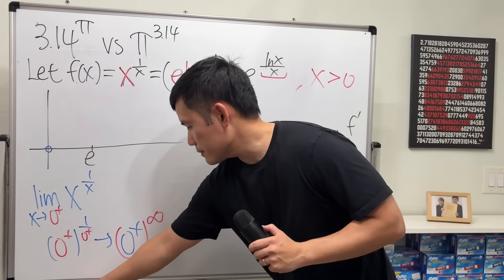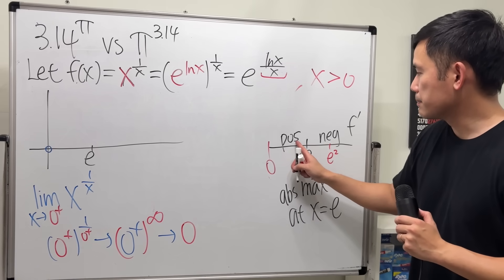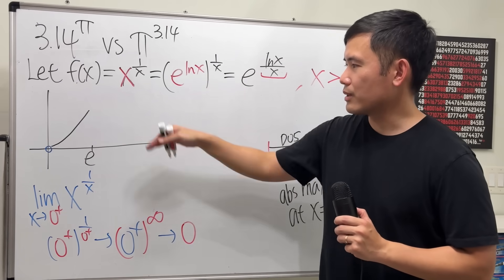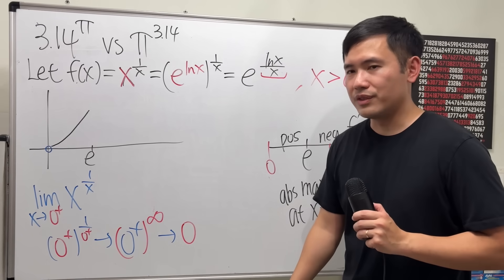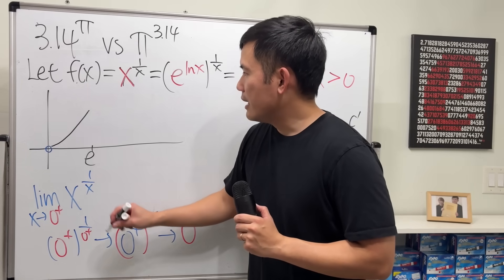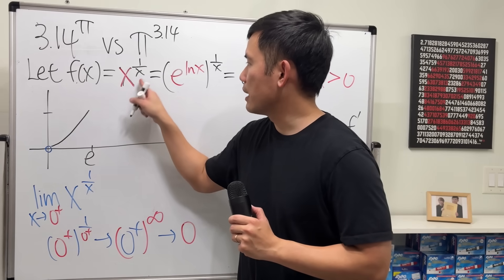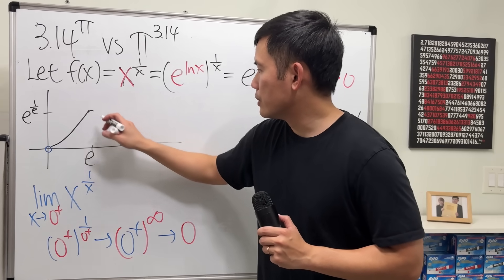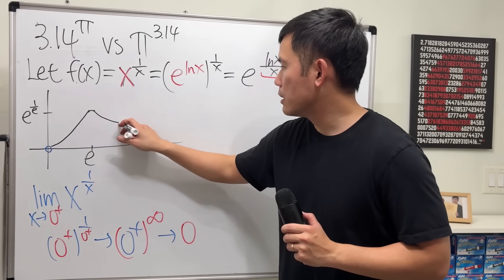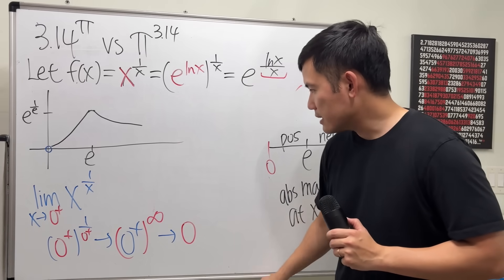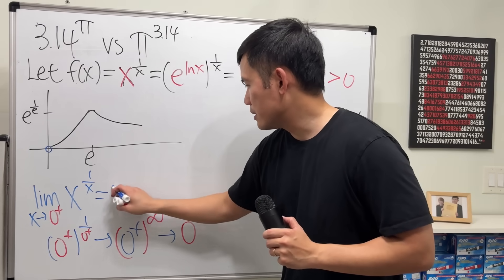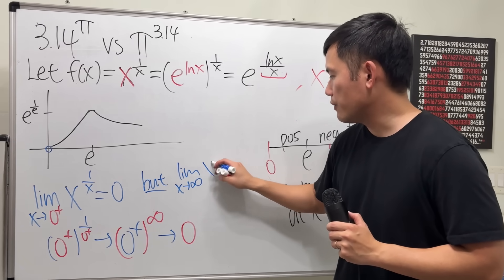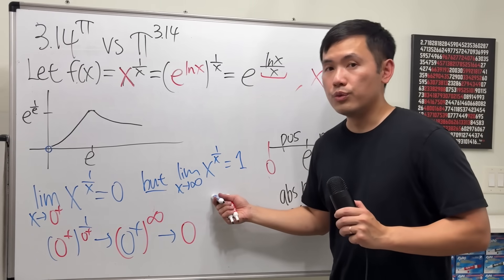The other way around though, if you have infinity to the 0 power, that is indeterminate form. You will have to do more work. But anyways, when x is approaching 0 plus, the y value is approaching 0. So, we will have open circle here. And we know that between 0 and e, the function has positive derivative. So, it's going to go up like this. And I'm not going to talk about the concavities. It's just that kind of go up like this, because I don't want to take the second derivative. We don't need to do that for this video. And it's going to reach a maximum when x is e. So, plug into here. That's e to the 1 over e power. And after that, it's going to drop.